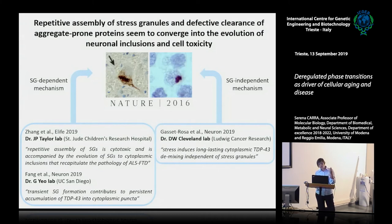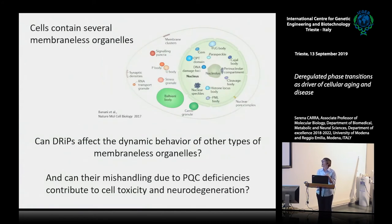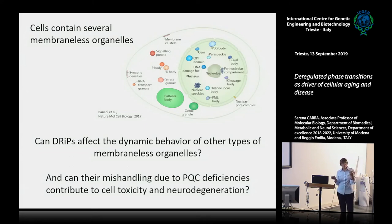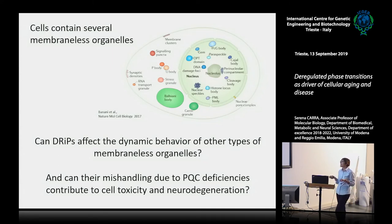This data clearly links what cells constantly produce as misfolded substrates and the impact these can have on membrane-less organelles. Having found this, and considering that cells contain a large variety of membrane-less compartments — many found in the nucleus — we asked: do DRiPs affect only the dynamics of stress granules, or can they affect other membrane-less compartments, and can their mishandling due to protein quality control deficiency contribute to cell toxicity and neurodegenerative diseases?